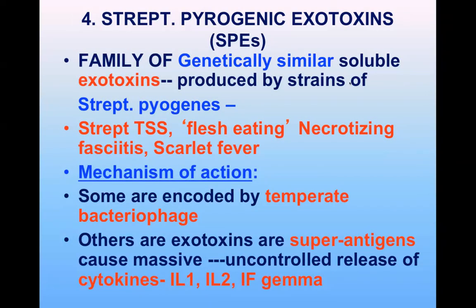Another group of exotoxins produced by Strep pyogenes are the pyrogenic toxins — a family of genetically similar soluble exotoxins produced by some strains. These are responsible for toxic shock syndrome, scarlet fever, or flesh-eating necrotizing fasciitis. They act as superantigens causing massive cytokine release, or some are encoded by temperate bacteriophage.